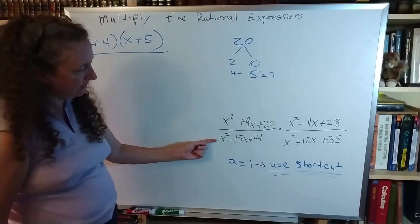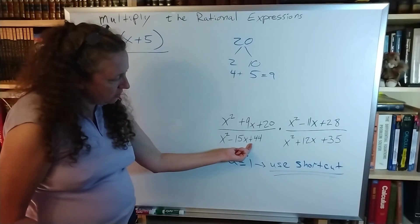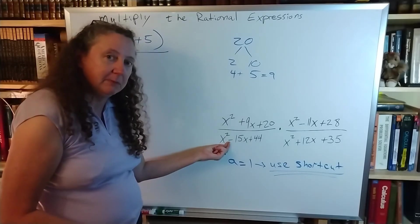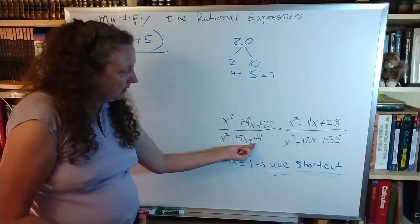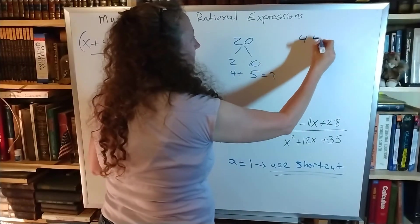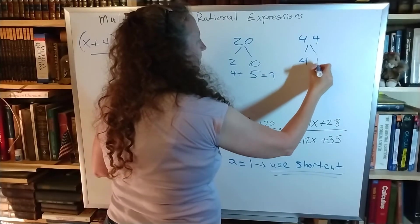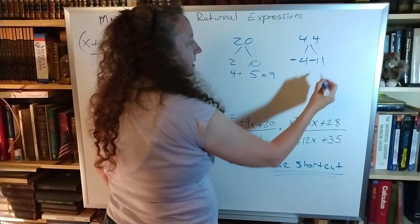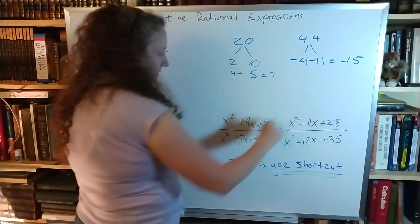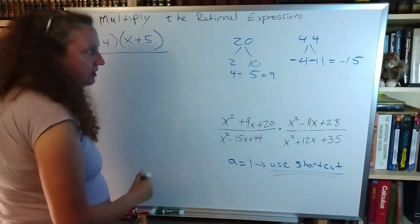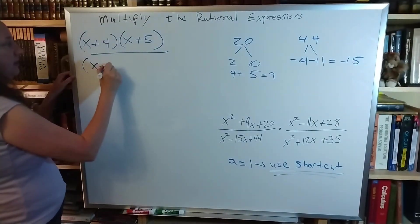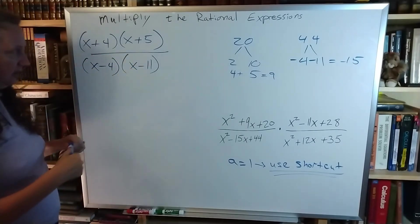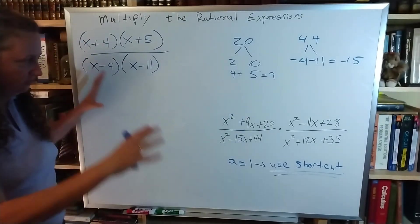Look at my next one here. I have 44. It's positive. So that means both of the signs are the same. I have a negative number for b, so both of my signs are going to be negative. So I take my 44. It could be 4 times 11. Will that work? That looks like that's going to work. So there's that. Use my shortcut. I have x minus 4 times x minus 11. So the first fraction is split apart.